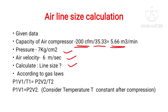According to the gas law, P1V1 over T1 is equal to P2V2 divided by T2. Here P1 is the initial pressure before compression, V1 is the volume before compression, and T1 is the temperature before compression. P2 is the pressure after compression, V2 is the volume after compression, and T2 is the temperature after compression. Since T1 and T2 are considered constant, our simplified equation becomes P1V1 equals P2V2.